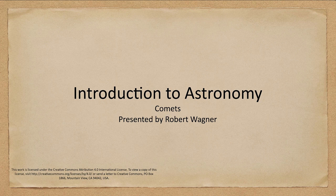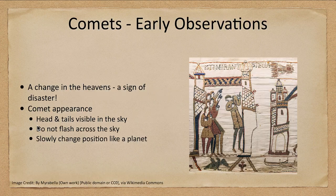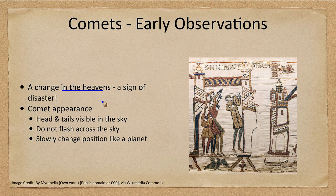Comets have been known since ancient times. What they were considered at the time was a change in the heavens. Remember that Aristotle had told us that the heavens were perfect and unchanging, so something new appearing in the sky such as a comet would be a sign of disaster coming. Here we see an image of that from a medieval tapestry.